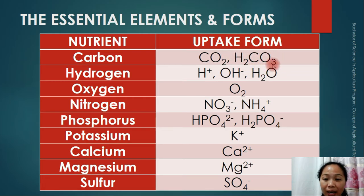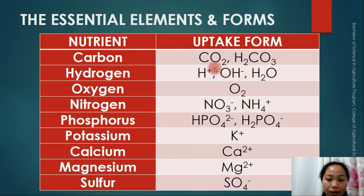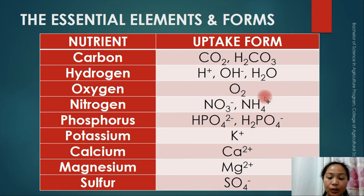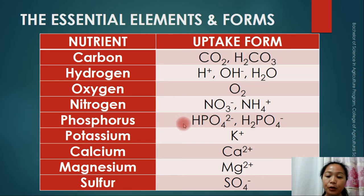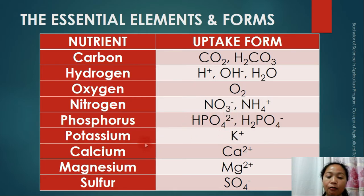Hydrogen has three uptake forms: hydrogen ion, hydroxyl ion, and water. Oxygen's uptake form is O₂. For nitrogen, the uptake forms are nitrate and ammonium — nitrogen can be taken from the air through nitrogen fixation. For phosphorus, the uptake forms are dihydrogen phosphate (H₂PO₄⁻) and monohydrogen phosphate (HPO₄²⁻). For potassium, the uptake form is K⁺.